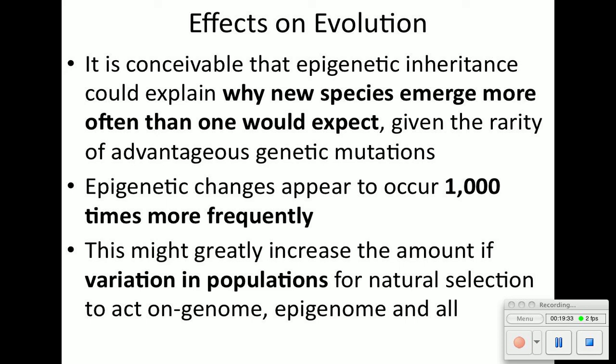As for the effects on evolution: with all these epigenetic changes going on, it could explain why new species emerge more often than one would expect. Epigenetic changes appear to occur about 1,000 times more frequently than genetic mutations, which might greatly increase the amount of variation in populations for natural selection. So epigenetics could contribute to new species arising.